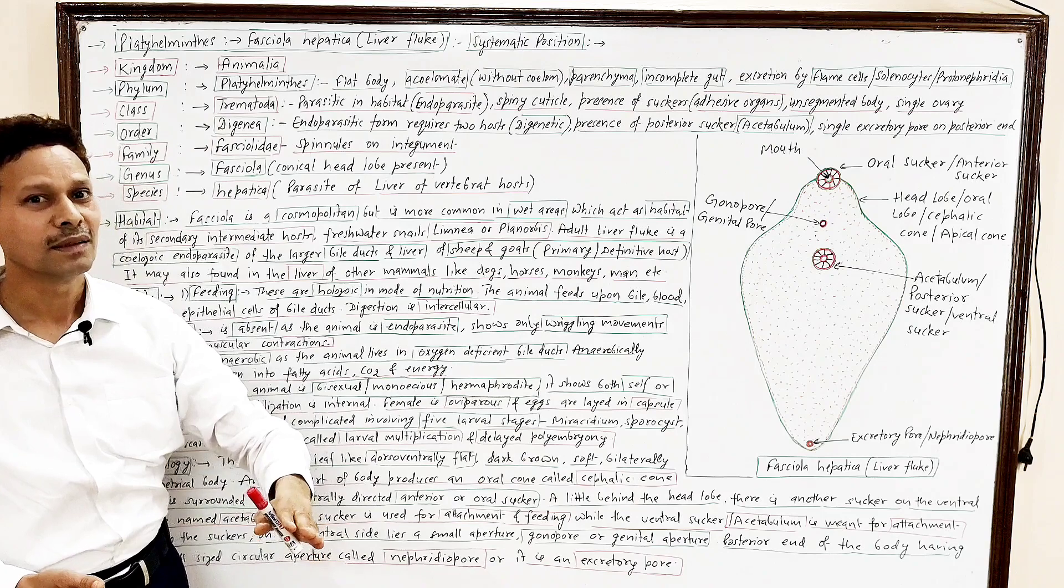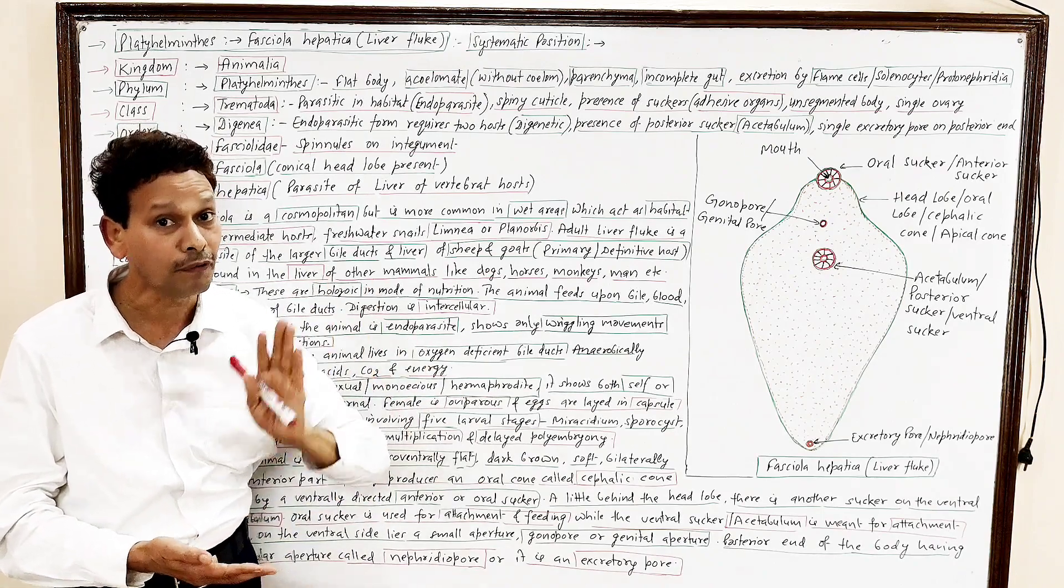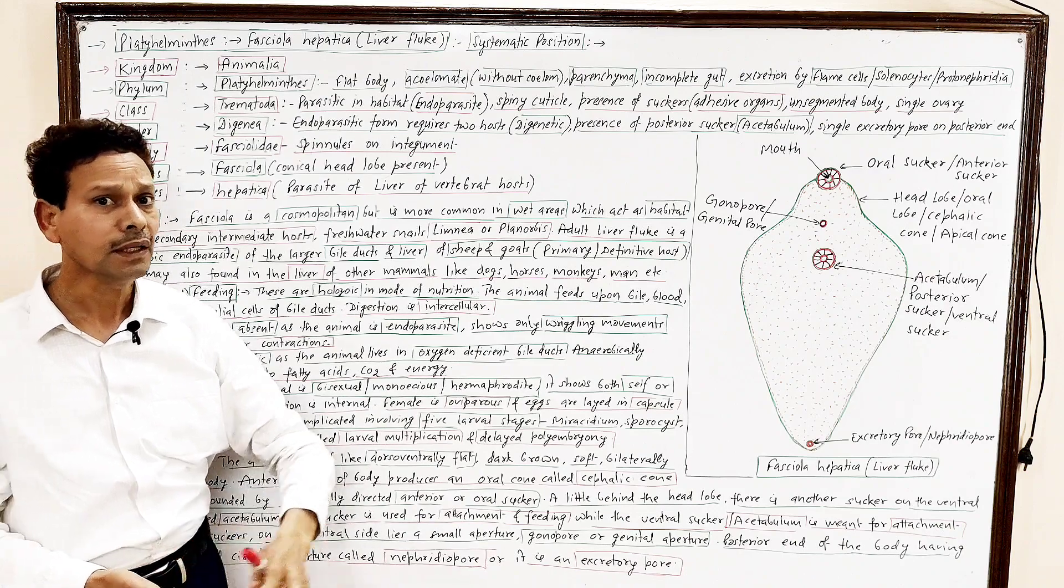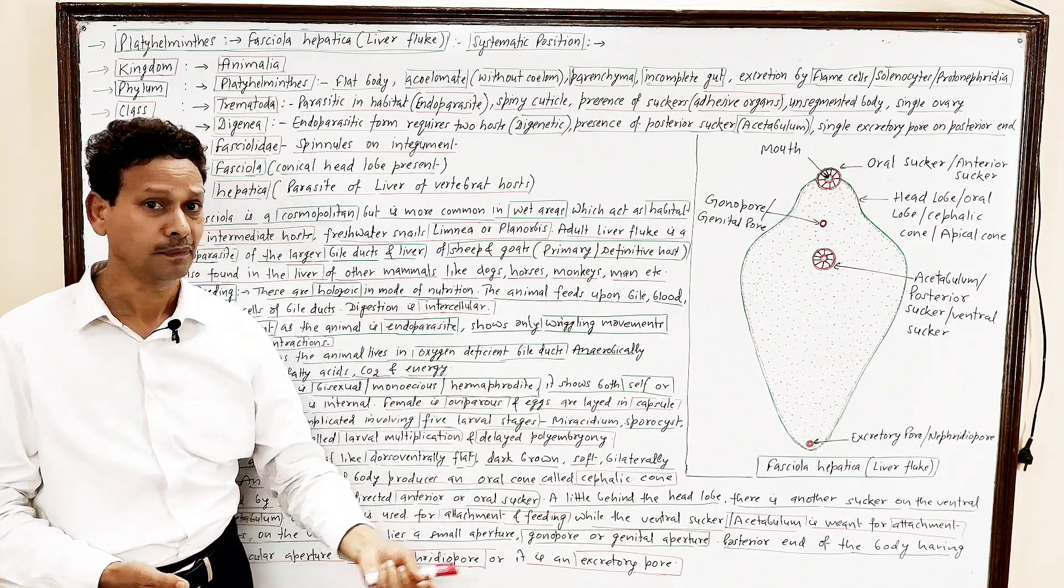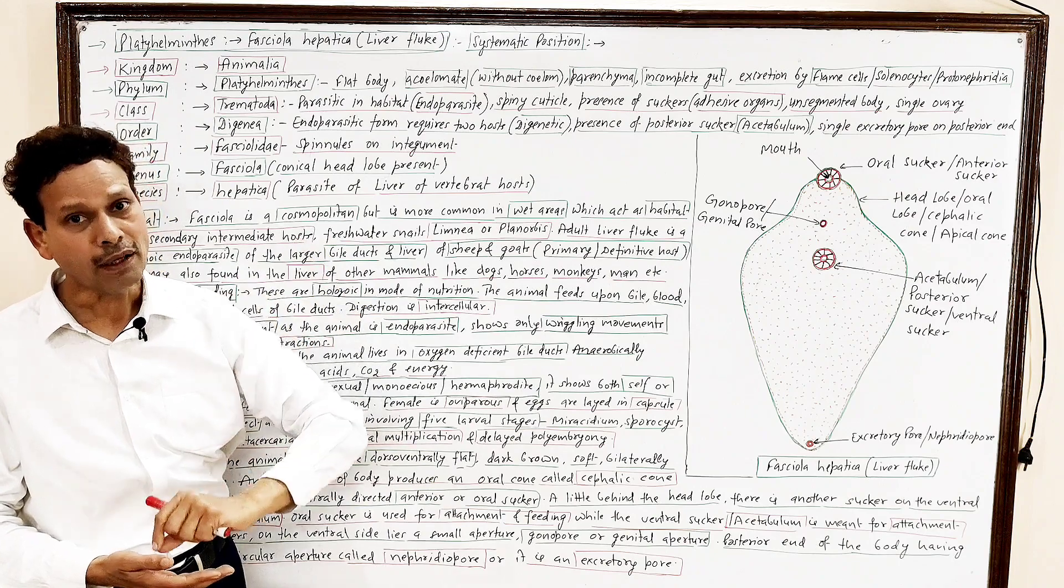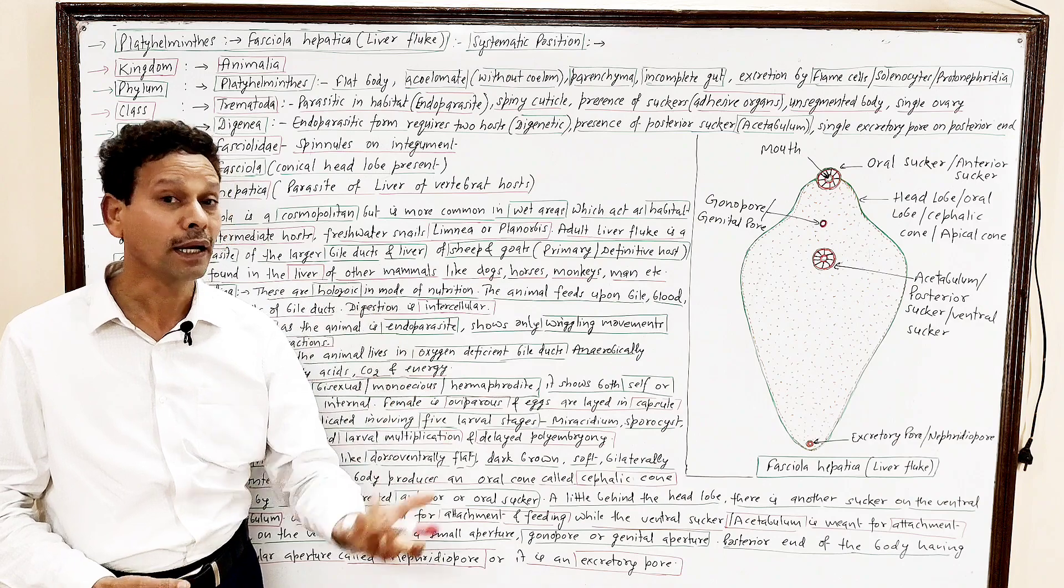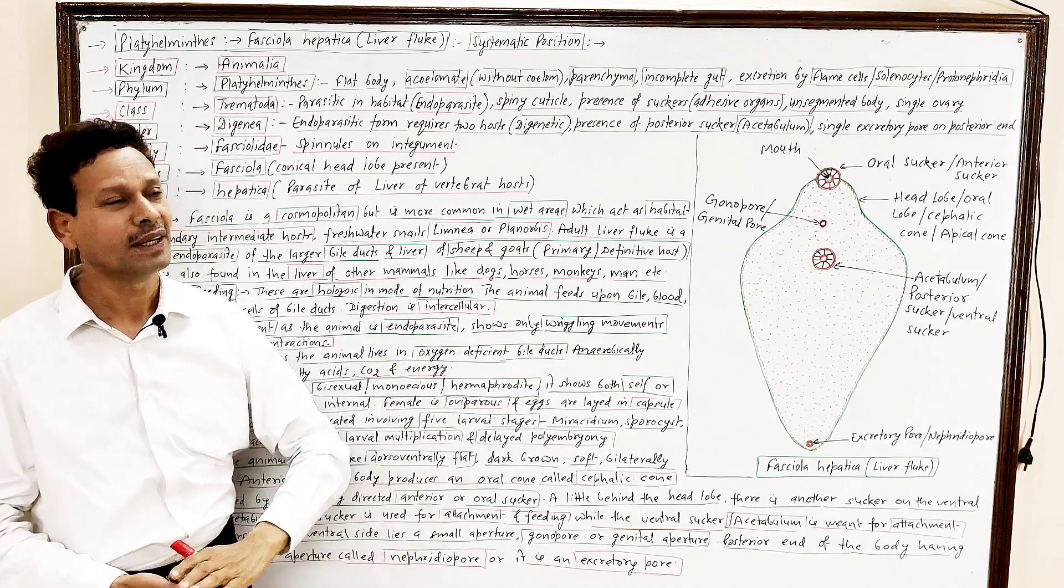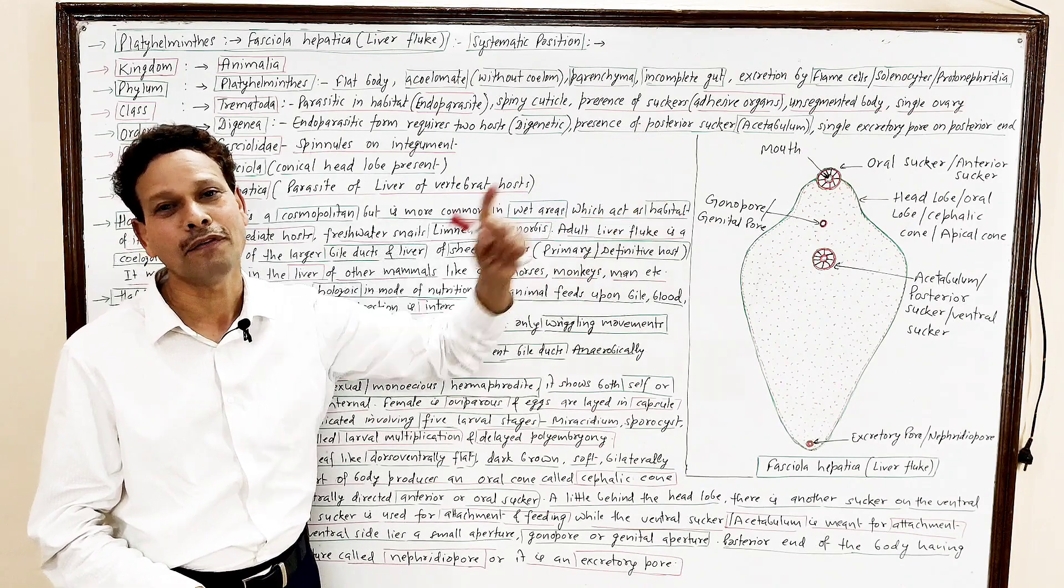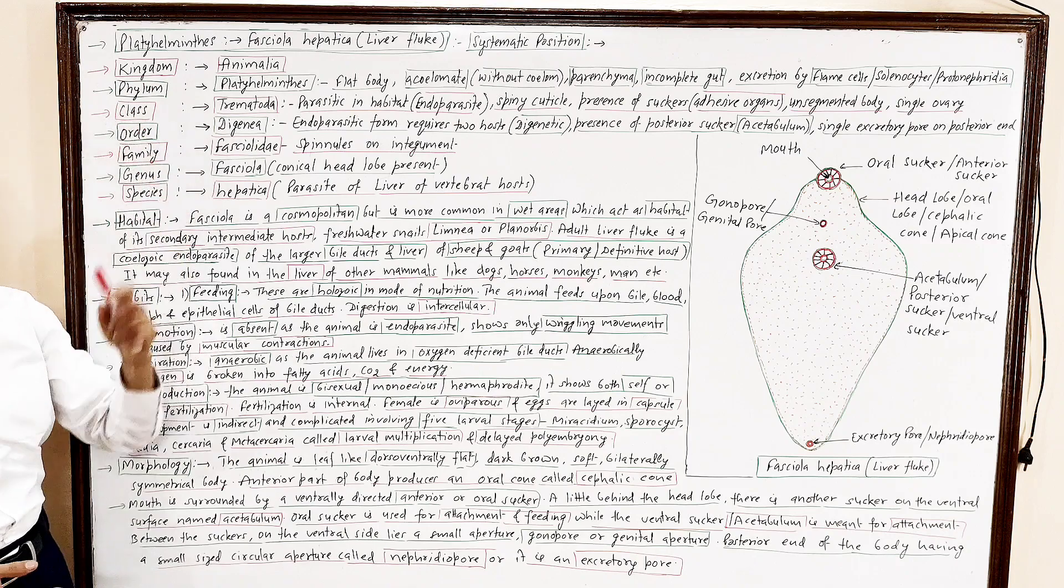Dear students, these are flatworms. Body is dorsal-ventrally flat. Coelomates, so these are acoelomates. In their body, special type of connective tissue, that is parenchyma. The gut is incomplete. And excretion by special type of flame cells, solenocytes, protonephridia. Class.